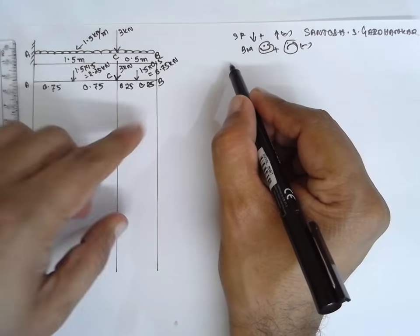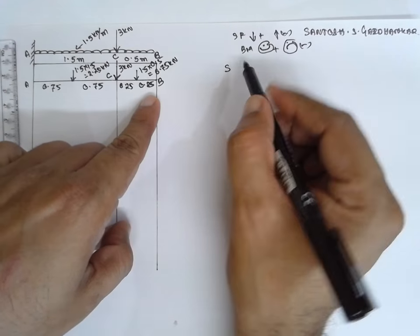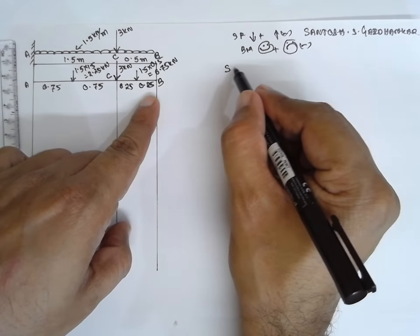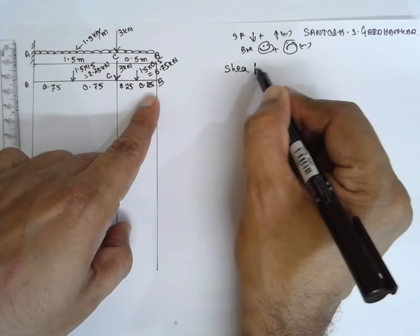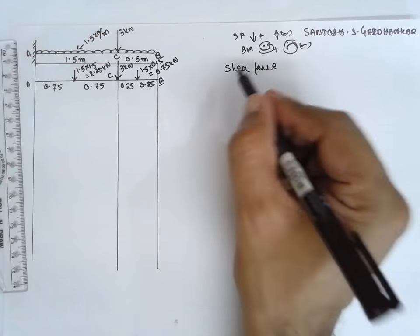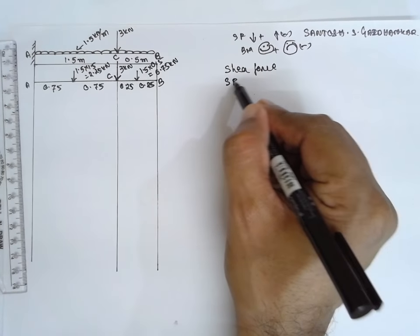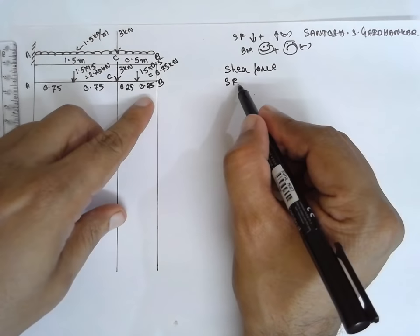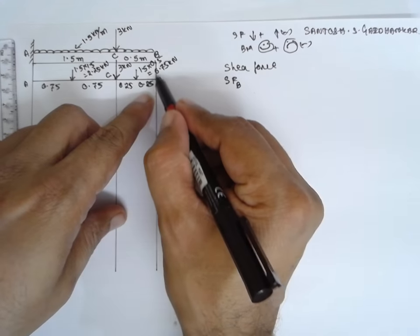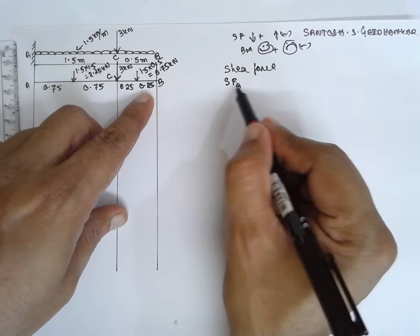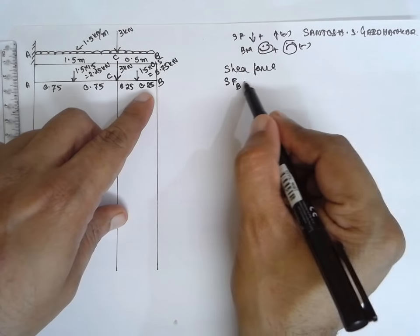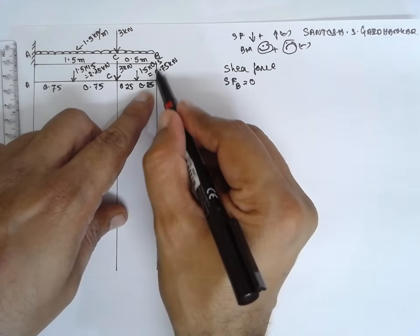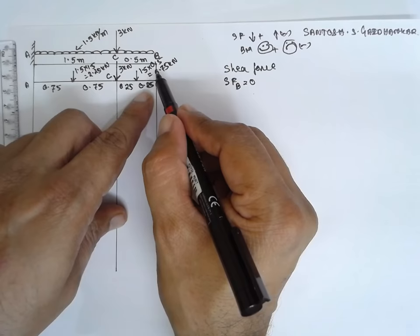Now SF. I am drawing the shear force diagram here. SF at B, there is no load. Therefore, you have to take single letter, that is 0. There is no load here.